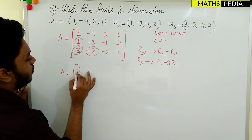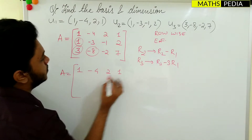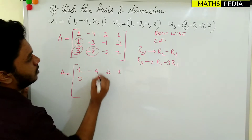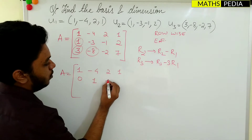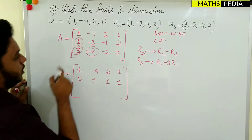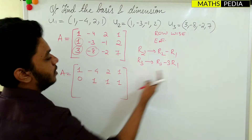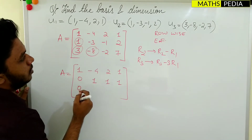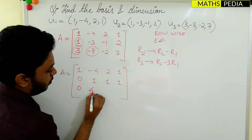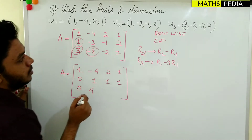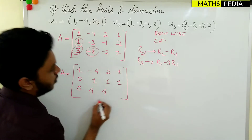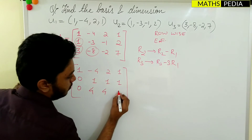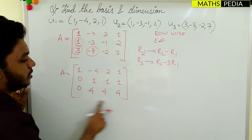After performing these row operations, the first row remains as it is. The second row becomes: 0, 1, 1, 1. For the third row: 3 - 3×1 = 0, -8 + 12 = 4, -2 + 6 = 4, and 7 - 3 = 4.